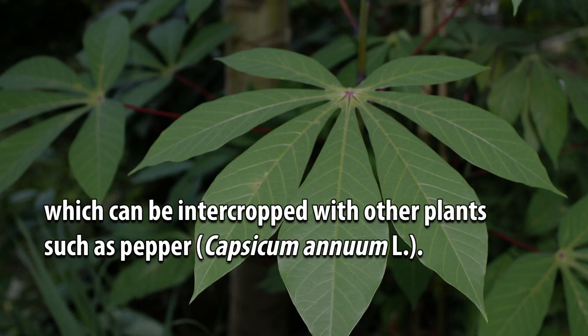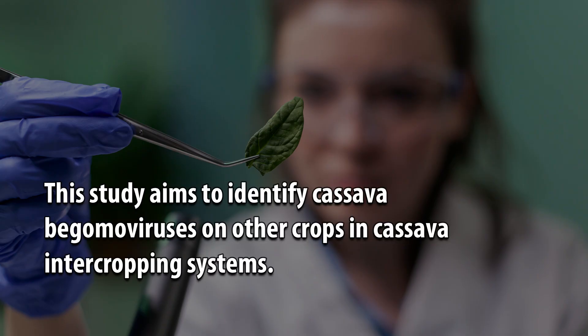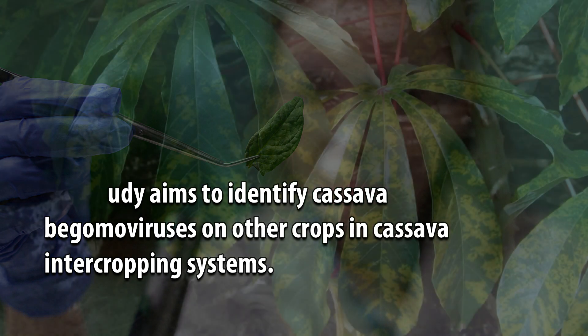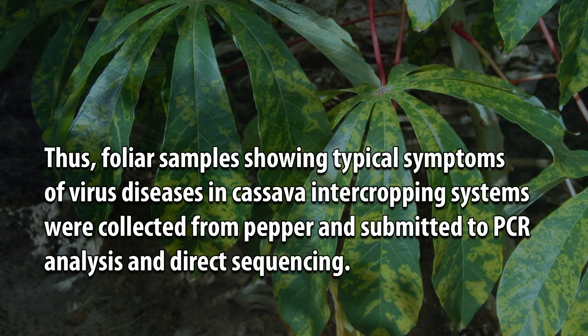Cassava can be intercropped with other plants such as pepper, Capsicum annum L. This study aims to identify cassava begamoviruses on other crops in cassava intercropping systems.